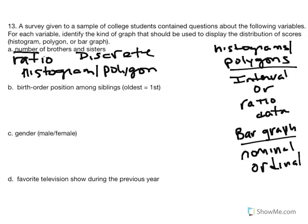Let's move on to birth order. Our first task is to identify the scale of measurement, then identify the appropriate graph. Birth order reports whether you're the oldest, youngest, middle child, etc. — first born, second born, third born. Even though we can attach a number to it, we can't say there are equal increments between these categories because they derive from word categories. There's also no meaningful zero, so it's not ratio.